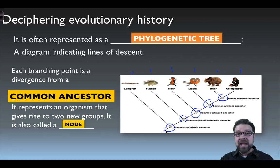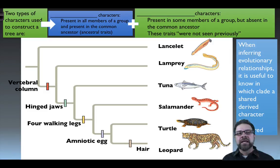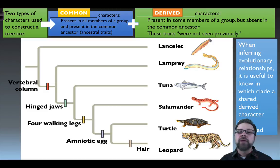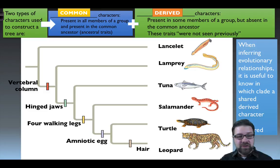In a picture with six animals, we can note five nodes — five common ancestors that occurred along the way. Of course there are many more animals present today than these six, but they did have common ancestors that met at certain points long ago. When constructing phylogenetic trees we focus on two types of characters. The first are common characters — present in all members of a group and present in the common ancestor, which we call ancestral traits.